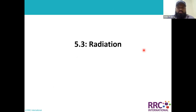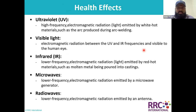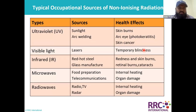Then we moved to radiation, where we discussed different kinds: ionizing radiation and non-ionizing radiation. Non-ionizing includes ultraviolet, visible light, infrared, microwaves, and radio waves. We saw the different types of radiation, their sources, and their health effects.